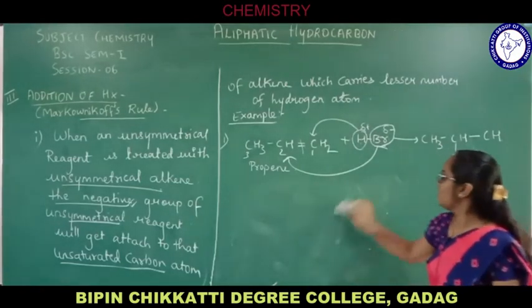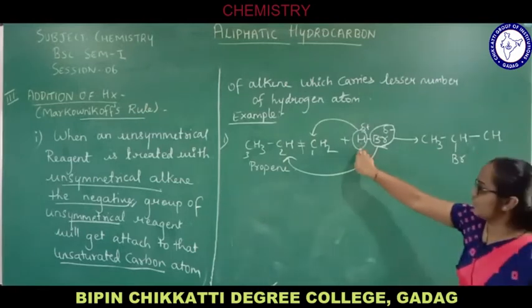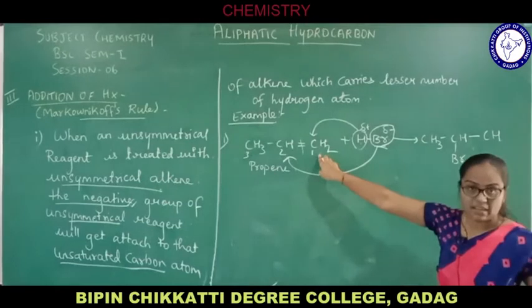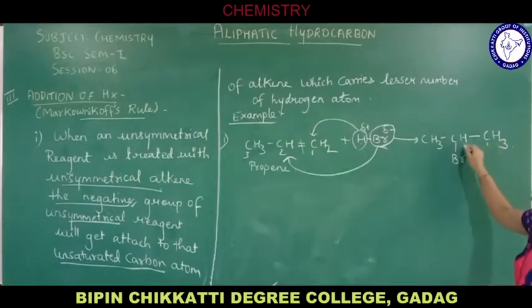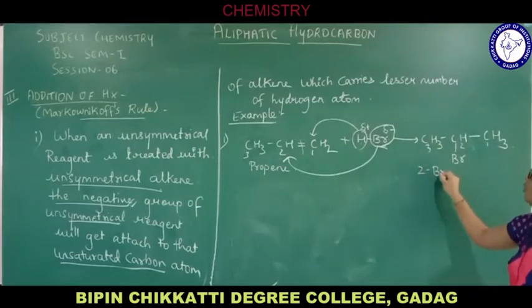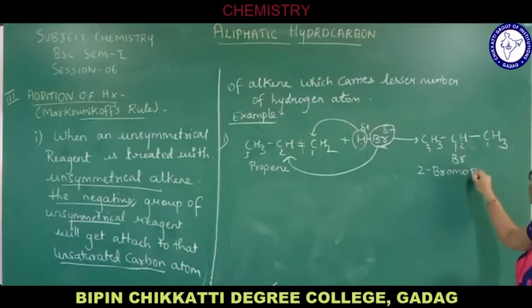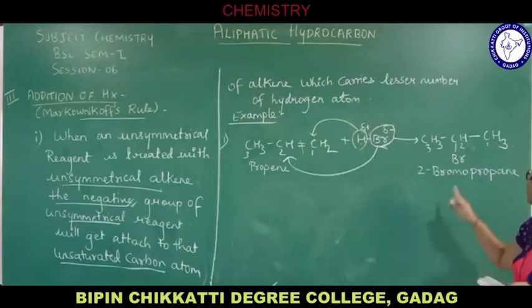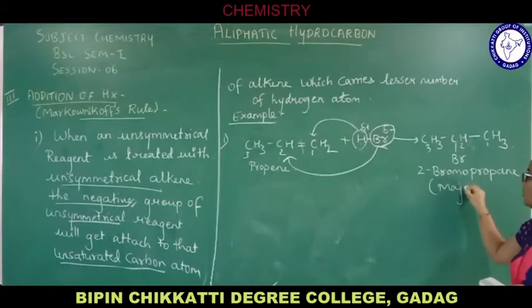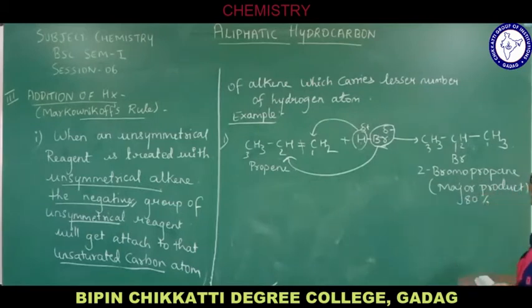This is how the reaction will take place. This hydrogen goes and gets attached to carbon number one, which already had two hydrogen, so it becomes three hydrogens total. The name of this product is 2-bromopropane. Why propane? Because the number of carbon atoms in the longest chain is three. This 2-bromopropane is considered to be the major product, with 80 percent yield.